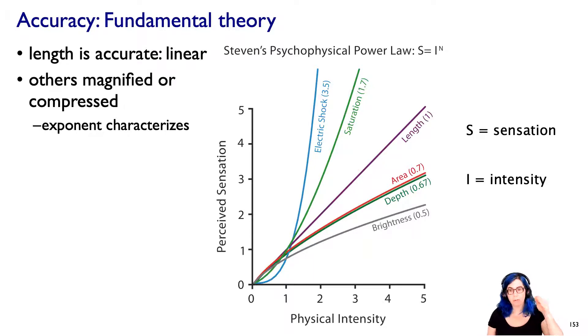And so basically, the exponent changes according to what kind of thing is getting perceived. And notice how in this diagram here, length is an exponent of one, that is, we are able to very, very accurately perceive length. In contrast with a lot of these other sensory modalities, there's either a magnification or a compression. And so the exponent here actually characterizes, first of all, which direction, magnify or compress, and by how much compared to something that was fully accurate.